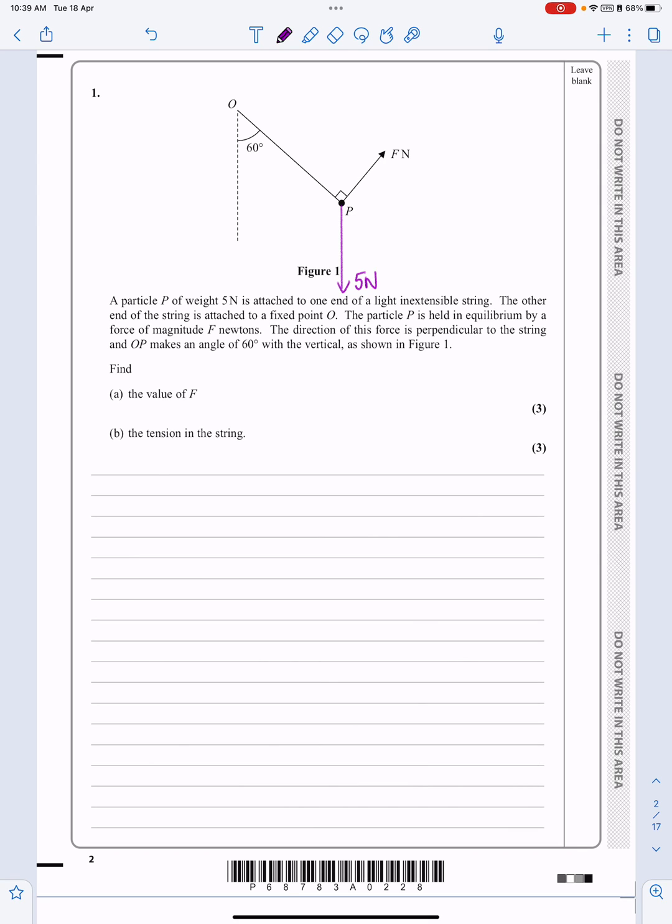Five newtons acting there. Light inextensible string. So that must be a tension there. Other end is a fixed point. Particle is held in equilibrium by a force of mass F. Direction of the force perpendicular to the string. OP makes an angle of 60 degrees with the vertical. So if that's true, then let's actually go ahead and do that. I've done part A. Part A then is putting all my forces on.